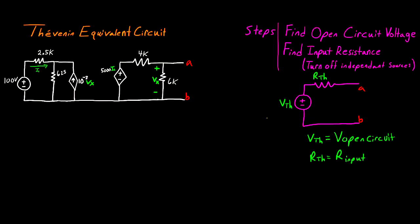We are going to be talking about the Thevenin equivalent circuit. Now, oftentimes students say that this is their least favorite part of the class, so in this video I'm going to go over an algorithmic approach to take any circuit and model it as a Thevenin equivalent circuit. This is going to work every time, for every circuit — there are no exceptions. But before I get into the approach, first I want to go over what a Thevenin equivalent circuit is.